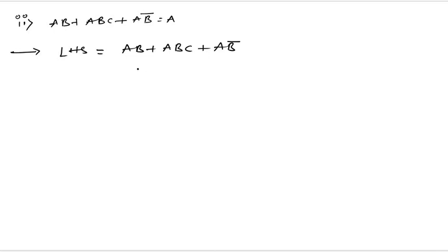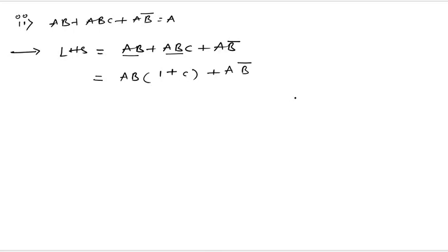In the next step, check for common terms. We have ab, ab, and ab-bar. I can take a into b as a common factor from the first two product terms, giving ab times (1 plus c), plus a into b-bar. Now applying the rule: 1 plus anything equals 1, so 1 plus c equals 1. We get ab into 1, plus a into b-bar.